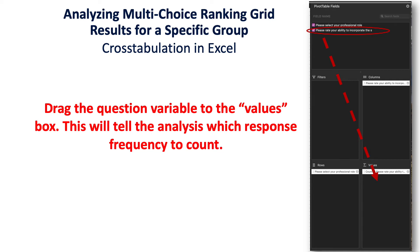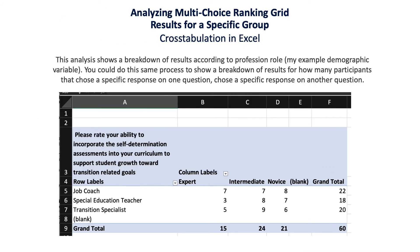Once you have that chart, the cross tabulation table shows a breakdown of results according to professional role. In my example, I have job coaches, special education teacher, and transition specialists in the rows. The columns — B, C, and D — are my scale rank options: expert, intermediate, and novice on a three-point scale. It shows me, for example, that seven job coaches selected expert, seven selected intermediate, and eight selected novice, with a grand total at the end.